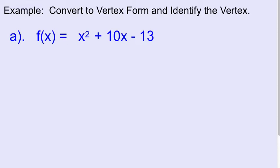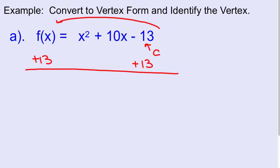So right now we have this c term. We're going to move this c term over to the other side. So we're going to add 13 to both sides. What happens on the right is this negative 13 and 13 cancel, and then on the left we have the function plus 13.